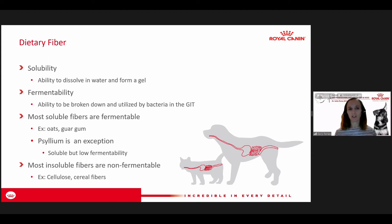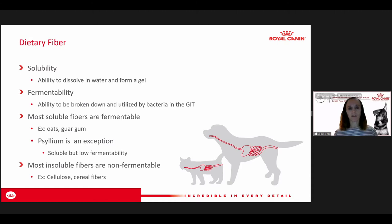When we think about fibers, we break them into two main categories: soluble and insoluble. Soluble fibers can dissolve in water and tend to be more fermentable — more easily broken down by bacteria. They come from natural ingredients like oats or guar gum. Psyllium is a unique type of fiber that is very soluble but has lower fermentability, which gives us a nice opportunity to use it in formulations where we don't want too much fermentability.